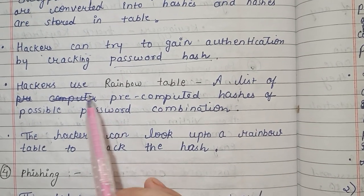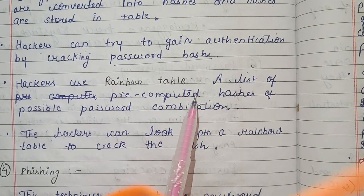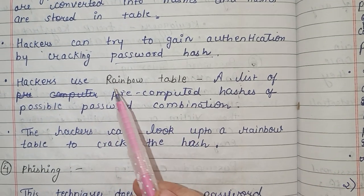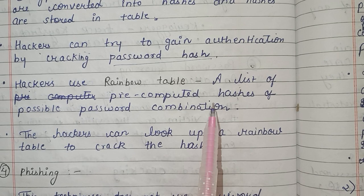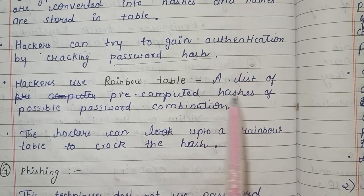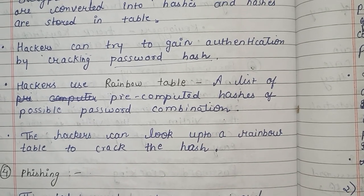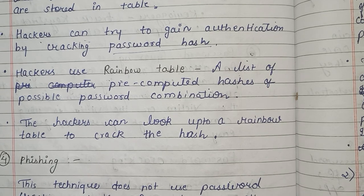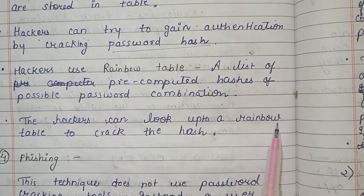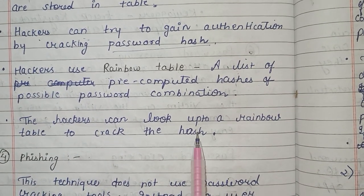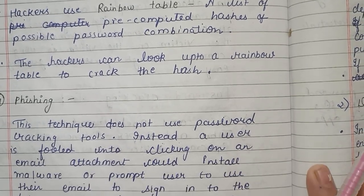Now, what do hackers do? They maintain a rainbow table, which is a list of pre-computed hashes of possible password combinations. What happens is that there are many pre-computed hashes, and the hackers try to use this table to crack the hash. That was simple.